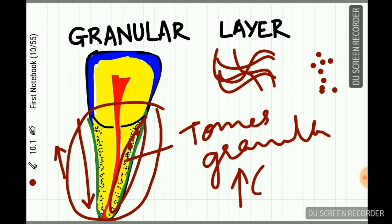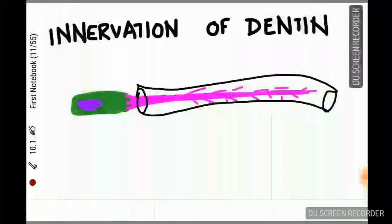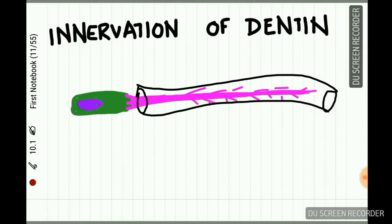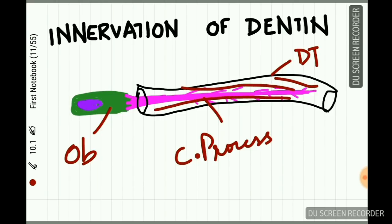The Tomes granular layer appears because in this area of root dentine there is coalescing and looping of the dentinal tubules. This layer is rich in calcium and phosphorus. Regarding nerve supply: the dentinal tubule contains an odontoblast process, and in addition, small minute nerves are also present inside the dentinal tubule in close association with the odontoblastic process.